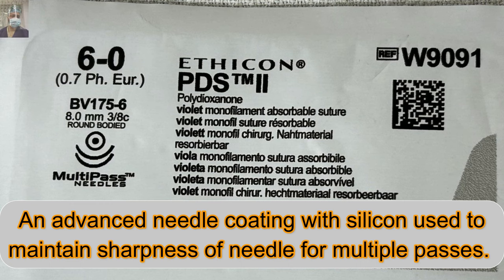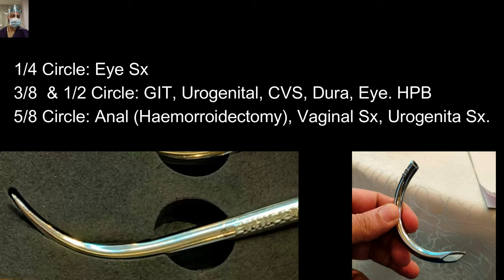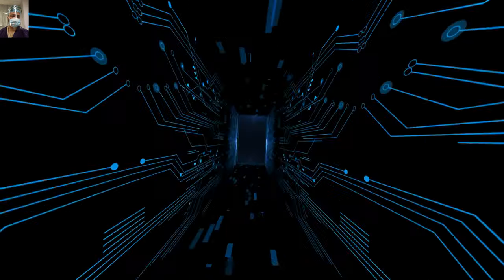Final circle — basically one-fourth circle — for eye surgery. Three-eighths and half circle for GI, urogenital, CVS, dura, eye, and HPB surgery. Five-eighths circle is basically used in anal surgery like hemorrhoidectomy or vaginal and urogenital surgery, where there is less space to rotate the needle.